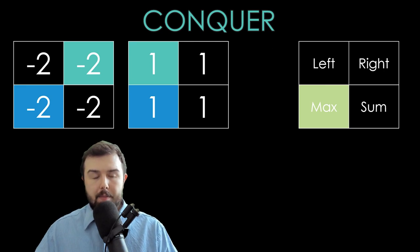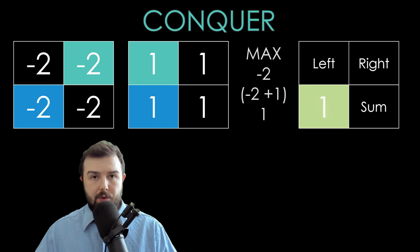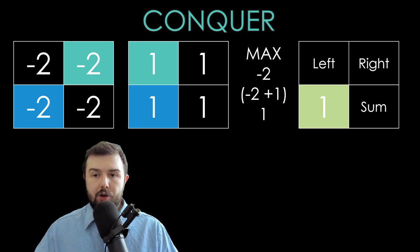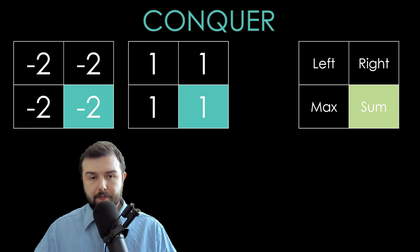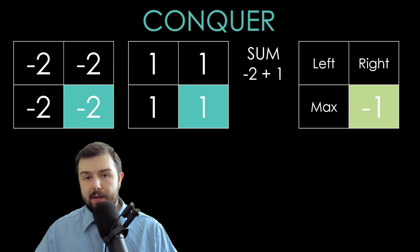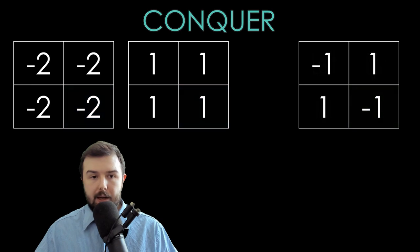To calculate max, we have up to three values. We either take the max value of the first item, or we take the max value of the second item, or we join the right part of the first item and the left part of the second item. To calculate the sum, it's pretty easy: we just summarize the sum of the first item and the second item. So our final result is on your screens right now.